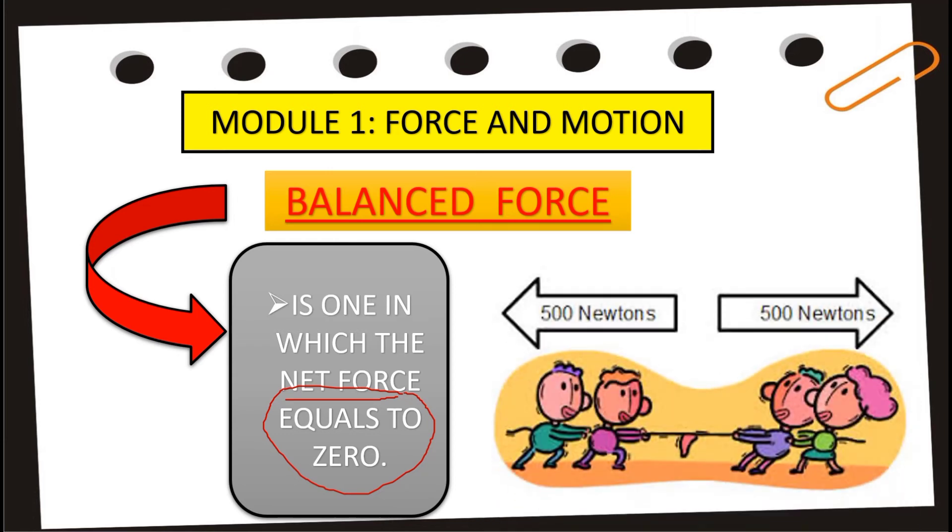Okay, for example, we are going to play a tug of war, where for each team we have two members. And let us say each team will be using same amount of force, which is 500 newtons. By the way class, the unit used for force is newton or simply capital letter N. Going back, what if each team will be using 500 newtons of force in pulling the rope against one another? Will there be any motion? Certainly no.